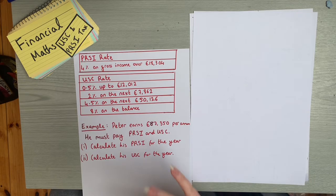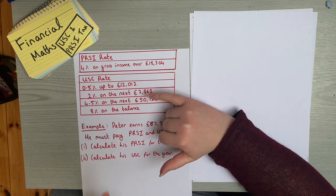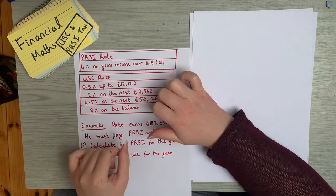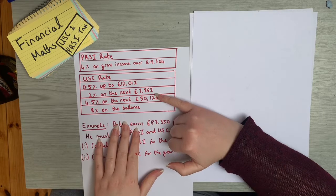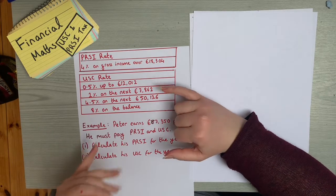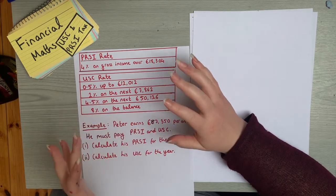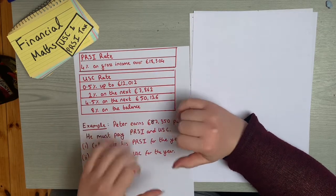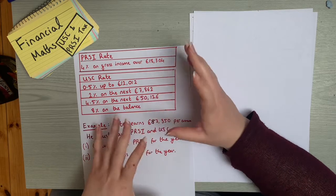USC is quite like PAYE, except rather than just having two components you could have up to four, depending on how much you earn. For example, if someone was earning €12,000 they'd only pay 0.5% in USC, because they don't earn above €12,000. You pay 0.5% on the first €12,000, then 2% on the next €7,862. It's kind of like stepping stairs — each band applies to a different portion of your income.